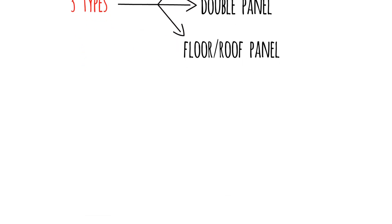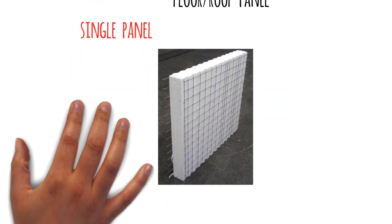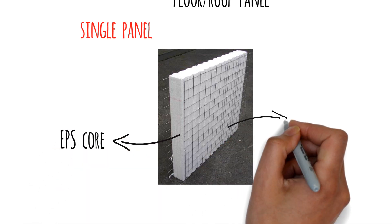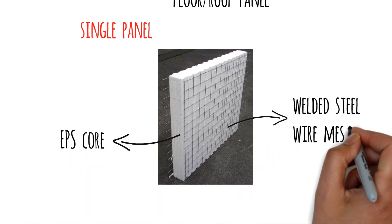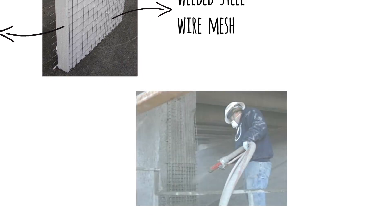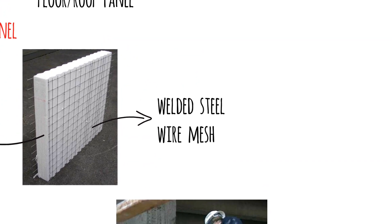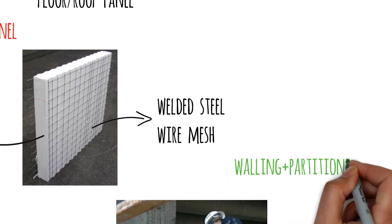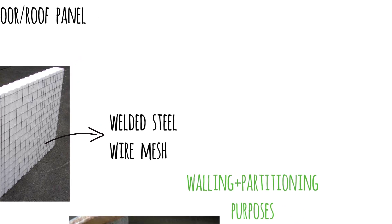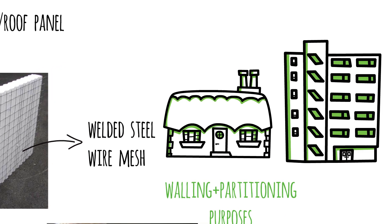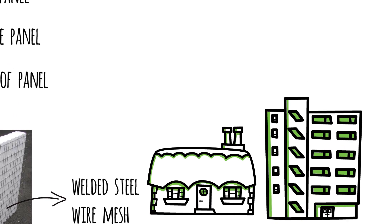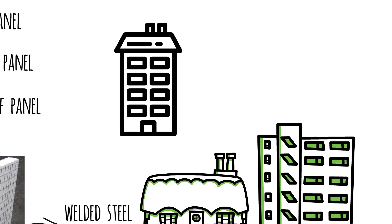Let's start with the first type, the single panel. The EPS core material is sandwiched between two mats of welded wire mesh. Once installed on site, the panels are shotcreted with concrete to give the panel structural strength. Single panels are used for walling and partitioning purposes, and for single and multi-story buildings. They can do up to four stories in height.